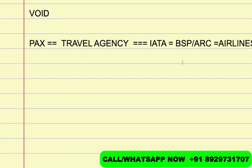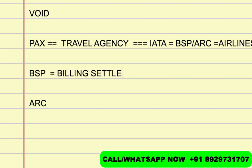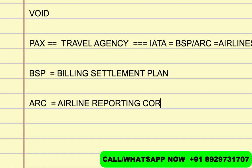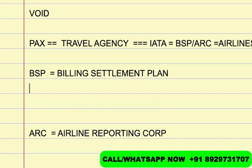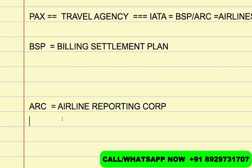BSP is Billing Settlement Plan. ARC is Airline Reporting Corporation. The basic difference is: BSP is for countries apart from USA, while ARC is only and only for USA — meaning travel agencies which are registered in USA. ARC is specifically for those.